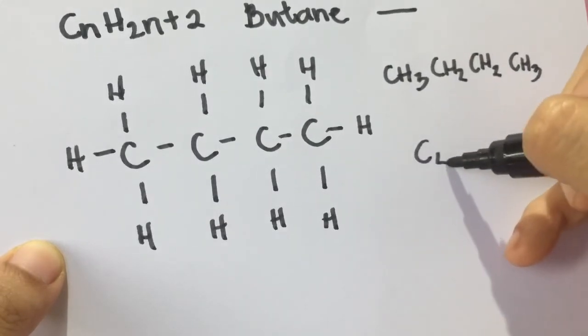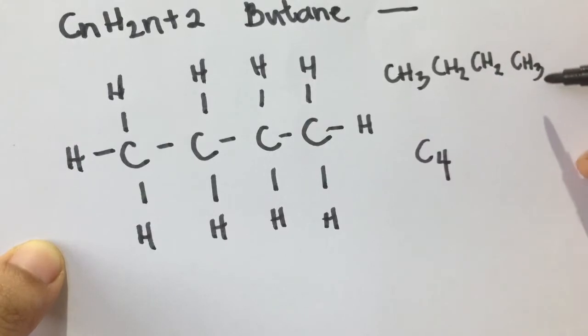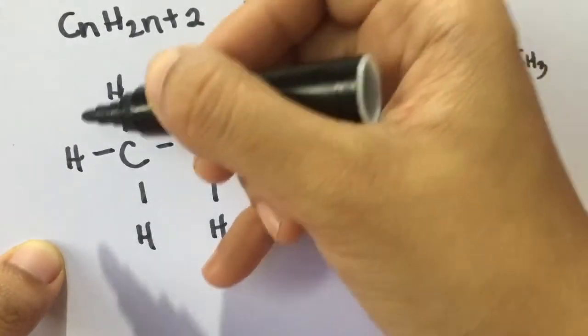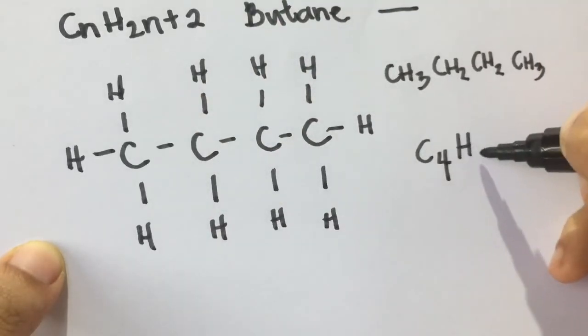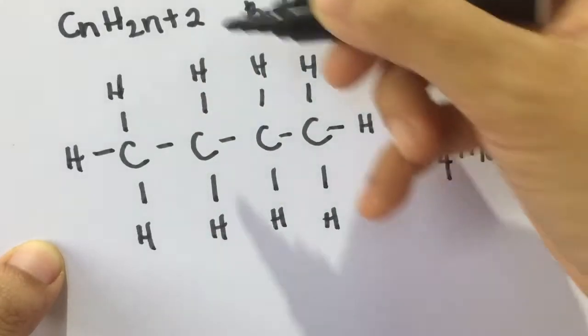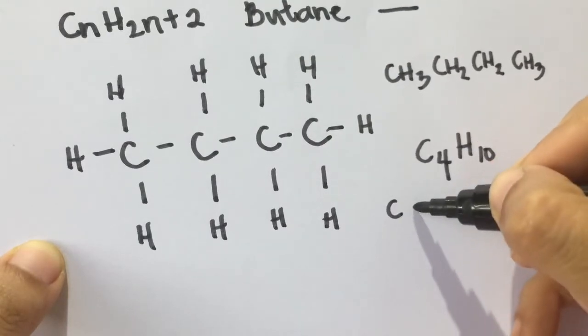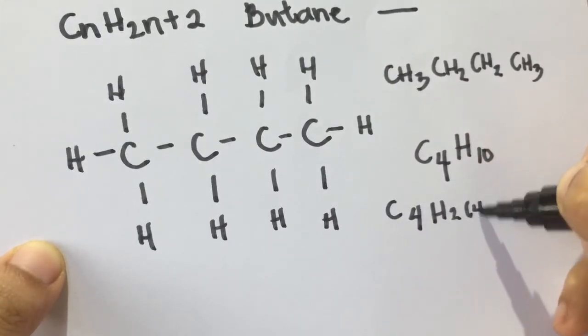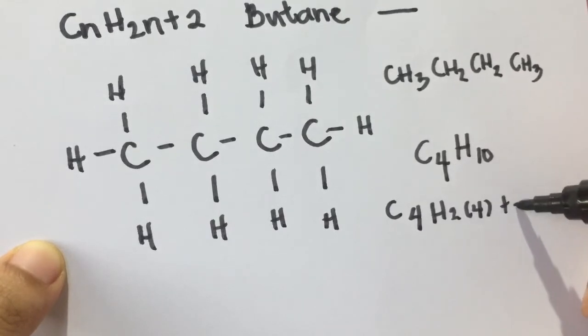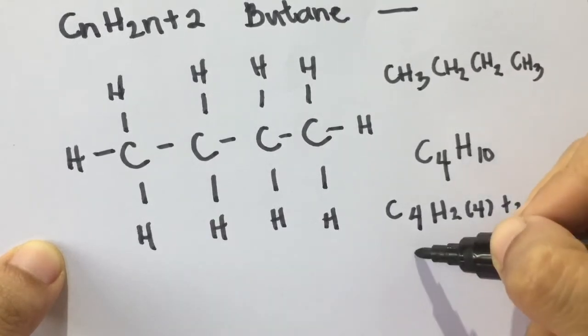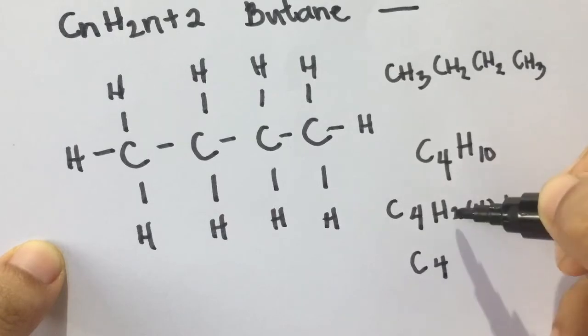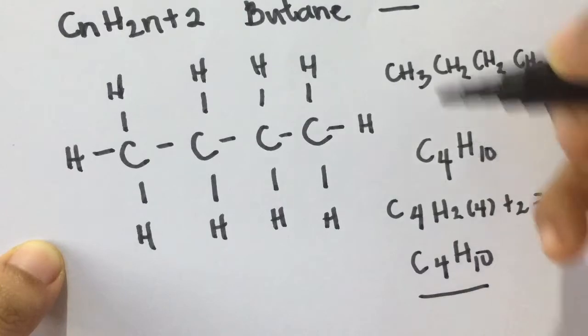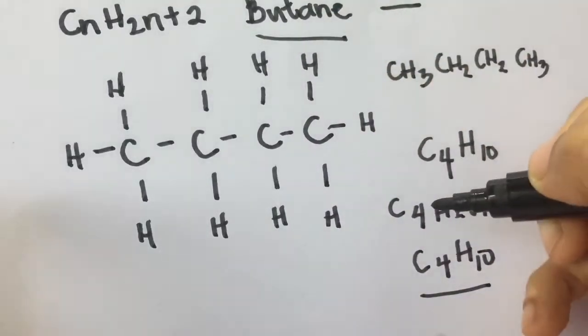We will count the number of carbons, four carbons, and the number of atoms of hydrogen: three, four, five, six, seven, eight, nine, ten. So we have H ten. Let's try to check the formula of alkane. C four, H two, times four, plus two. So C four, H two times four, eight, plus two is equal to ten. C four, H ten, and that is butane.